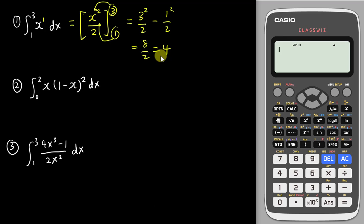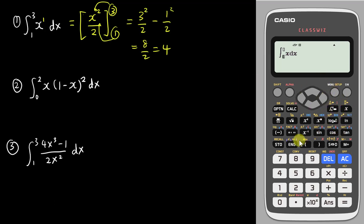To verify with the calculator, press the integration button, then type x using the x button — you don't need to type x to the power of one, just leave x. Then press next to input the limits from 1 to 3, press equal, and the calculator gives the answer four.